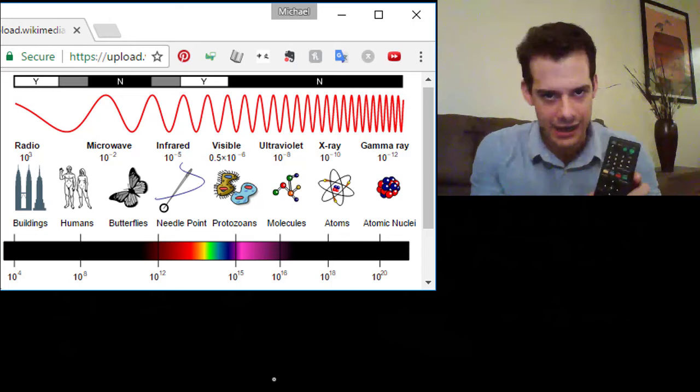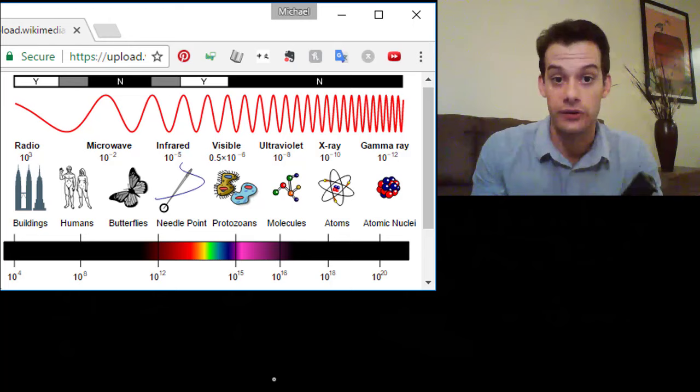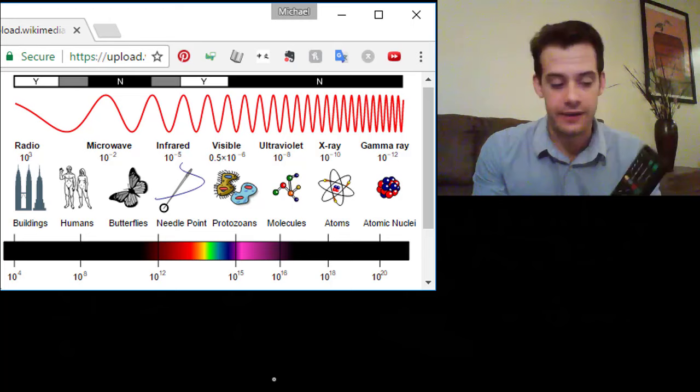So remote controls communicate using infrared light. That's why you don't see anything coming out when you push the button, you don't see any light going towards the TV. But there is light being emitted and actually there is a way that you can see it. So you'll have to take my word for this because this only really works in person. I can't actually do this demonstration via camera.